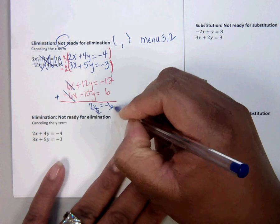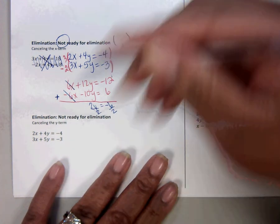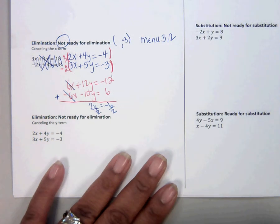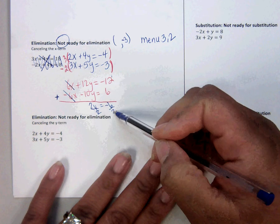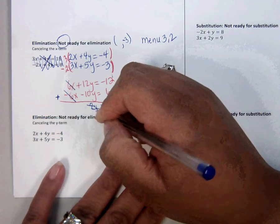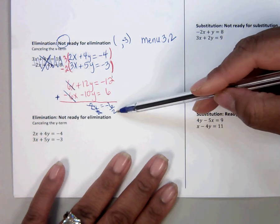So, negative 3 in the y spot. Now, plug negative 3, because that's what this is when it cancels. And you simplify. y equals negative 3.